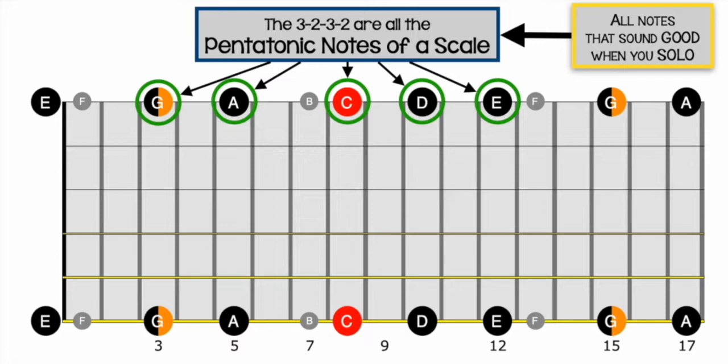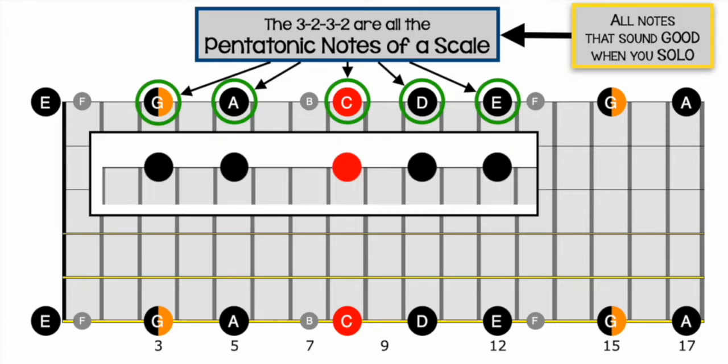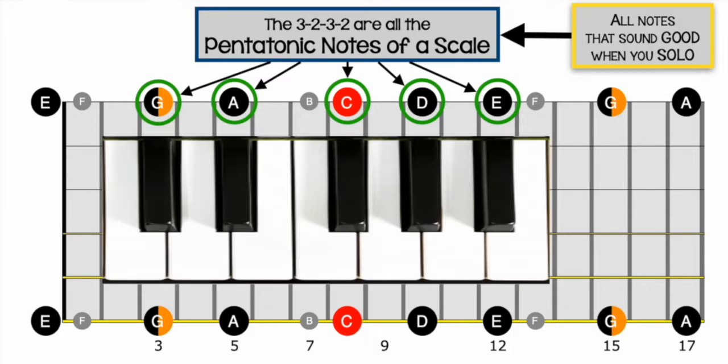A pentatonic scale is just five notes: C D E A and G in this case. Of the full do re mi scale, the C D E F G A B C. As I was mentioning, they all sound good if you're playing a song in C.